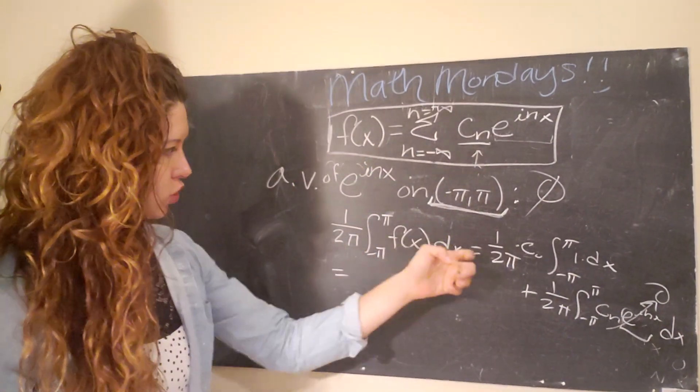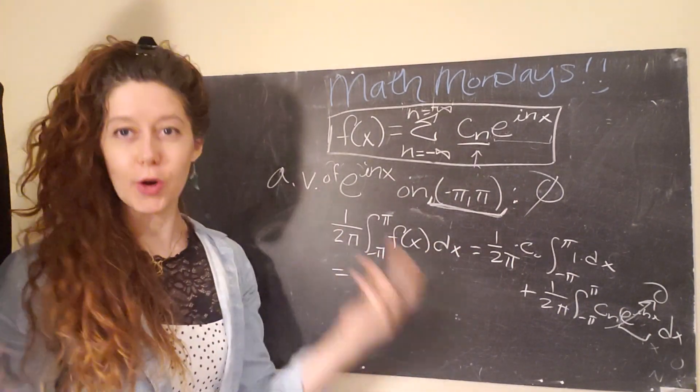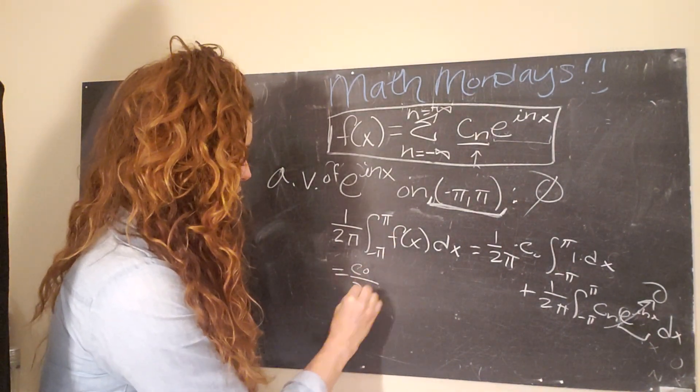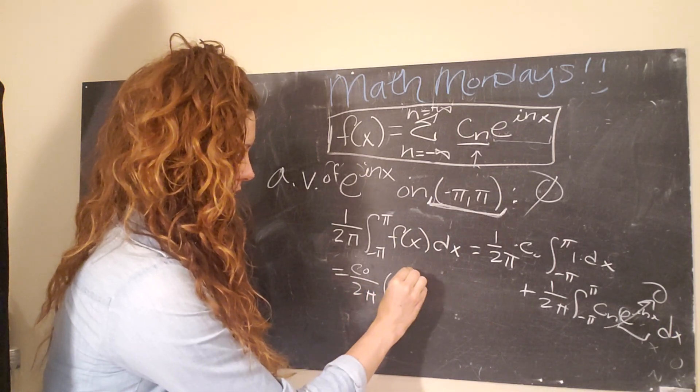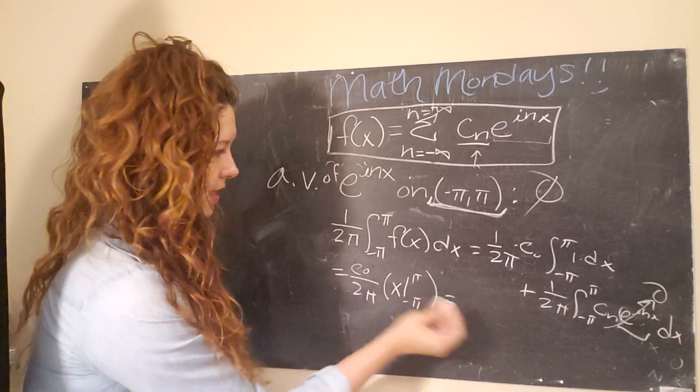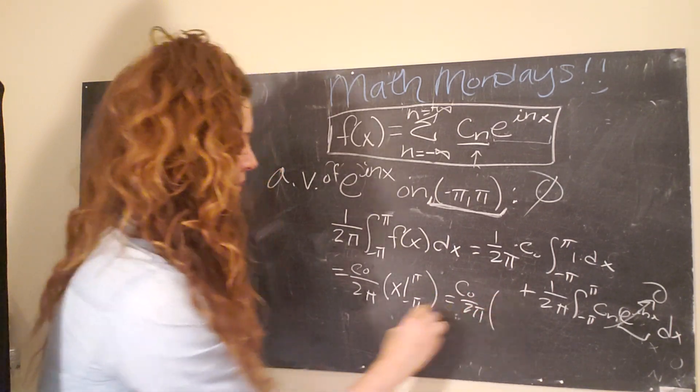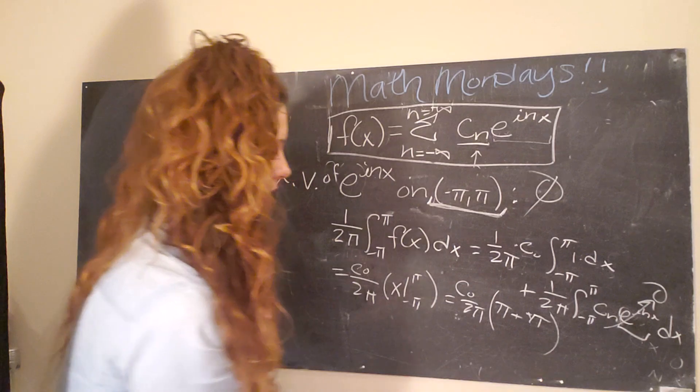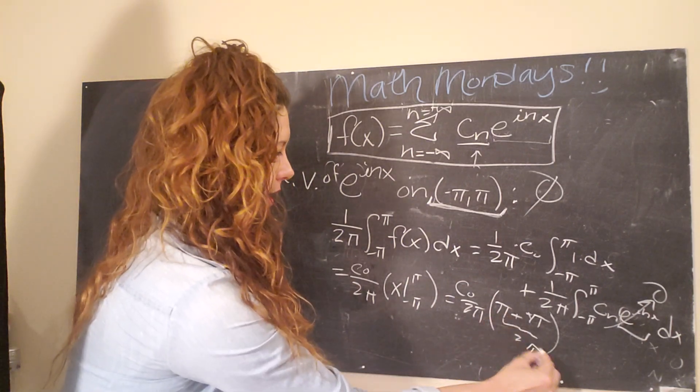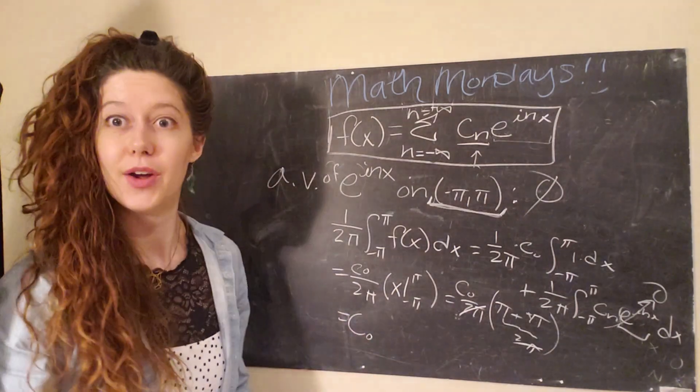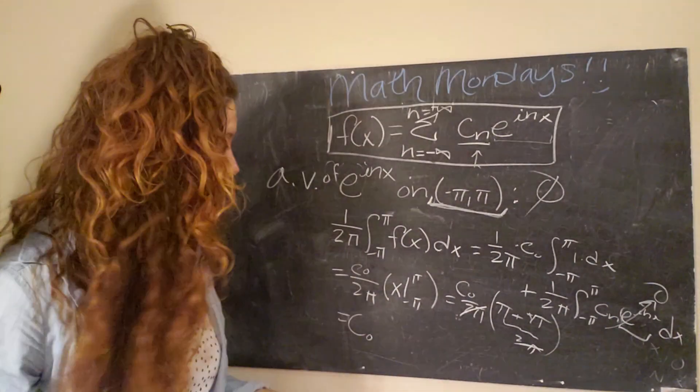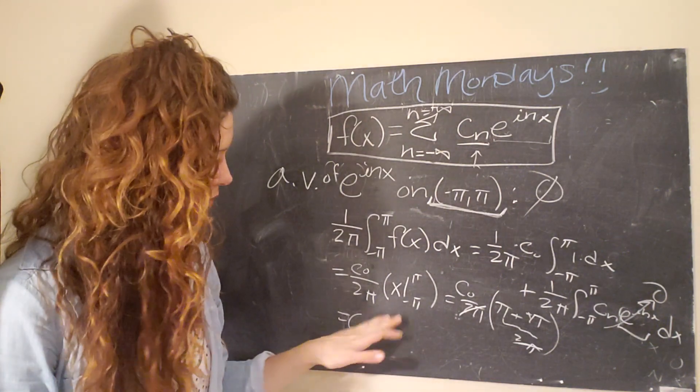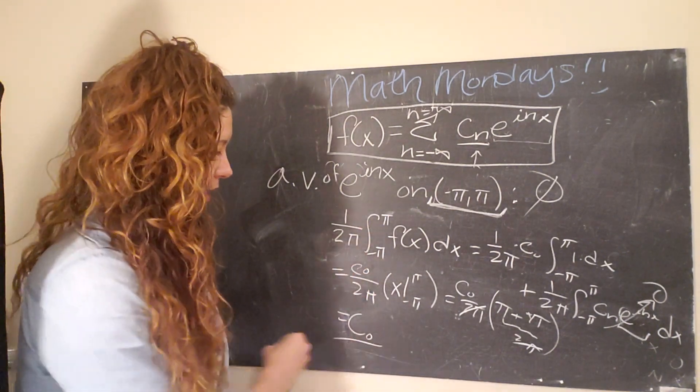So then we get that the average value of our function that we are expanding in our Fourier series from negative pi to pi is just equal to c naught over 2 pi, x from negative pi to pi. And then this actually equals c naught over 2 pi times pi minus negative pi. There we go. Pi minus a negative pi. The negative signs cancel. This becomes 2 pi. This cancels with this, and we just get c naught. Okay. Wait, what? What just happened? Well, basically what we just showed is that the average value of our function that we are expanding in a Fourier series over the interval from negative pi to pi is equal to c naught.